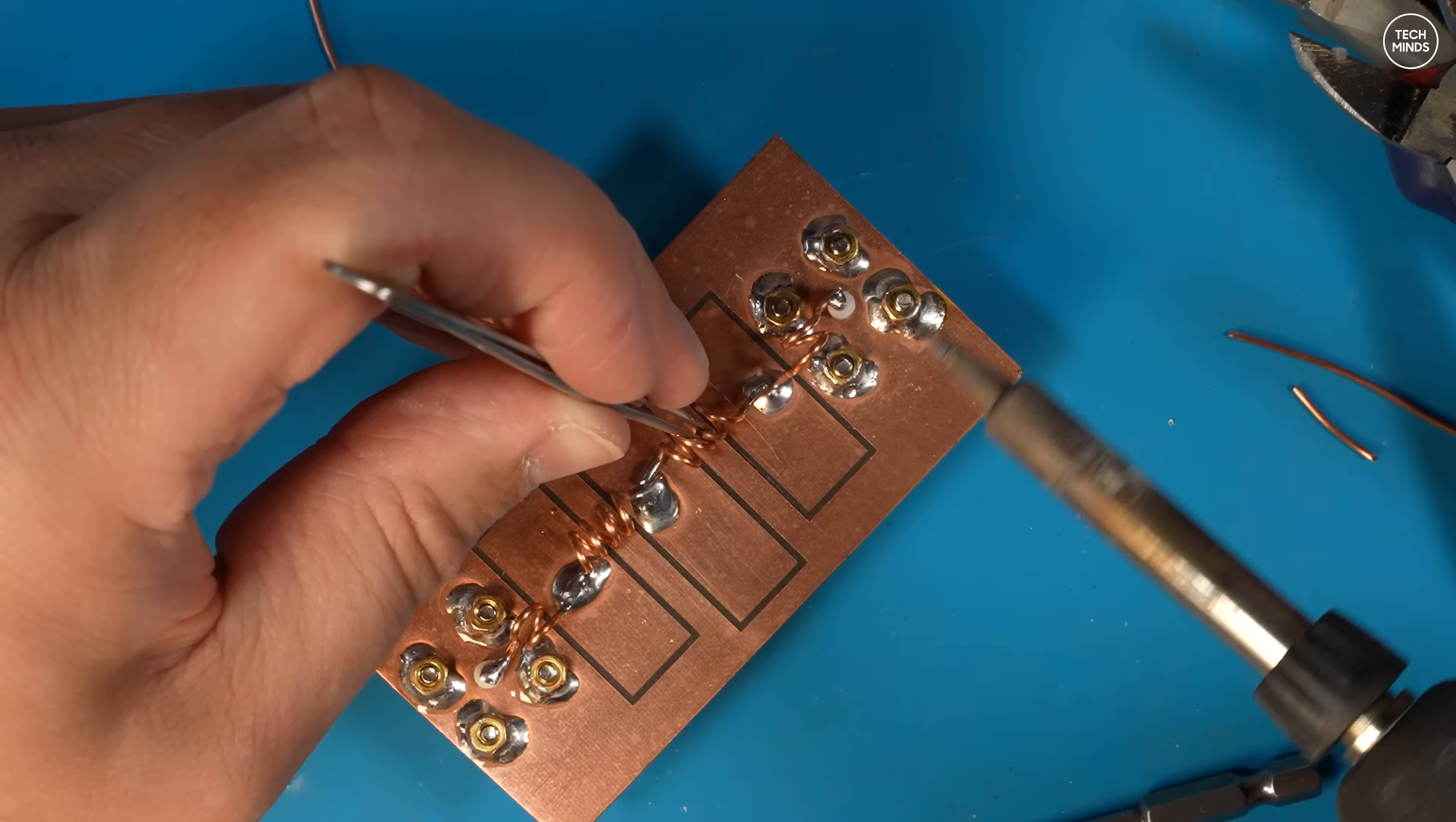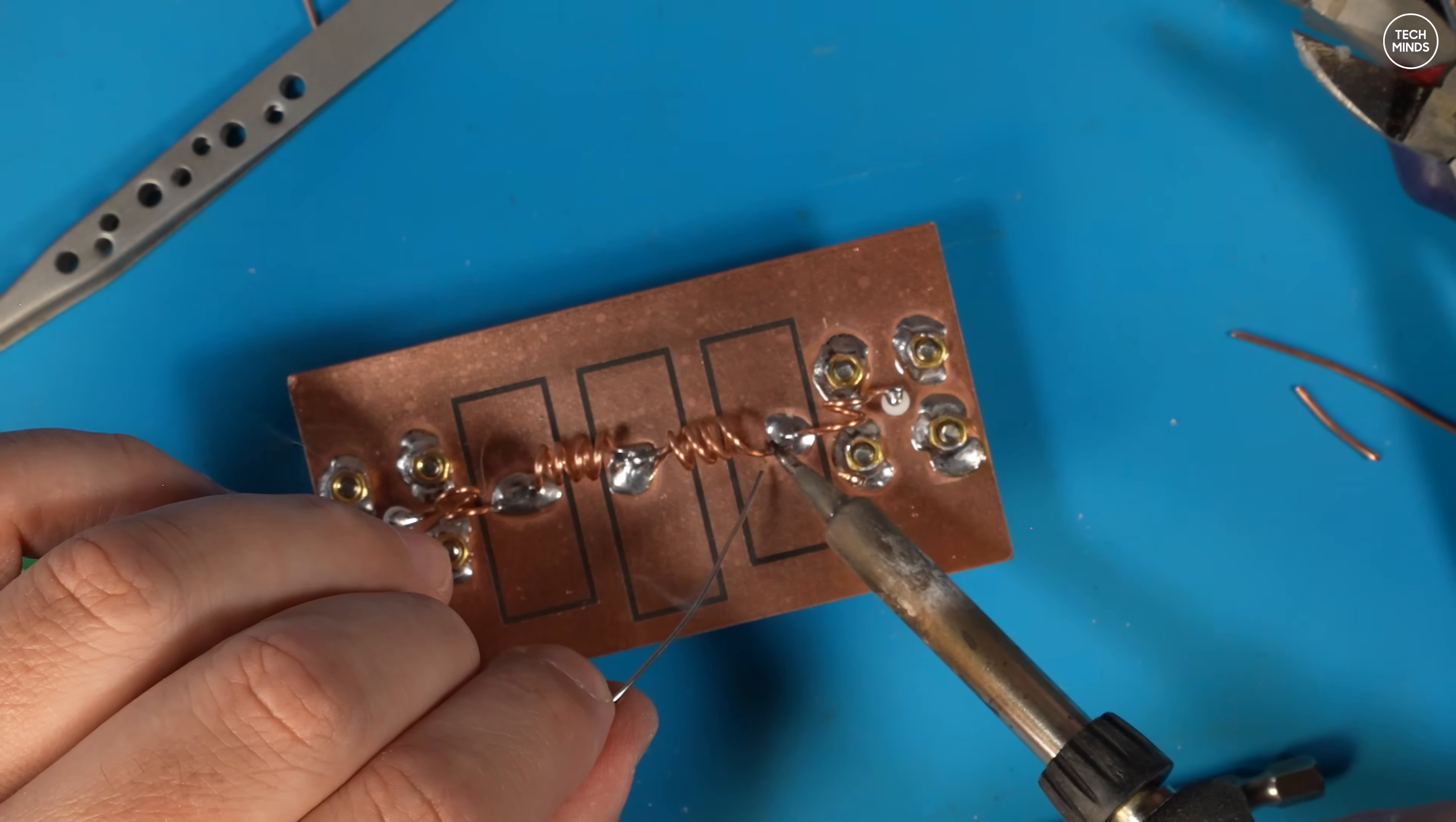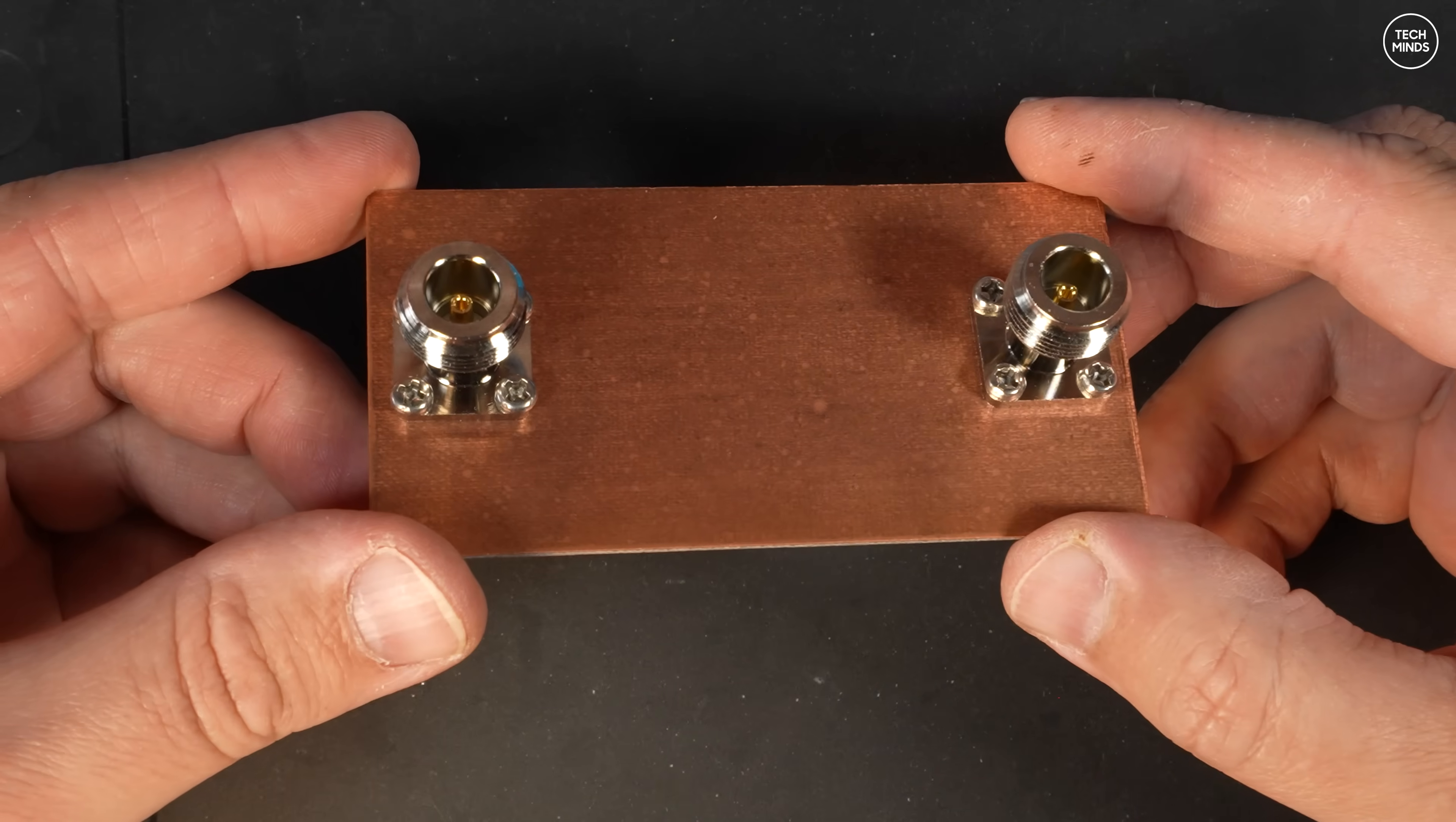So now it's time to solder these last two coils to the board between those capacitors. The copper wire gets very hot all the way through very quickly. Copper is an extremely good conductor, so using a pair of tweezers to hold the coil while soldering is advisable, unless of course you're like my missus and have asbestos fingers and don't feel the heat. And there we go, one high power 70 centimeter low pass filter.